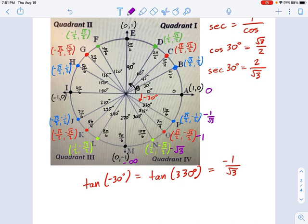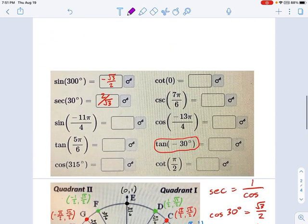I guess it doesn't really make sense to put a plus or minus. There we go. Whatever. That does not exist down there. So my tangents down in the fourth quadrant at point P, that's 330 degrees or negative 30 degrees, is negative 1 over root 3. Okay, so that's what we have right here. Negative 1 over root 3.